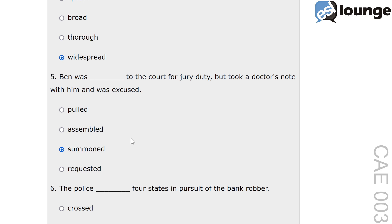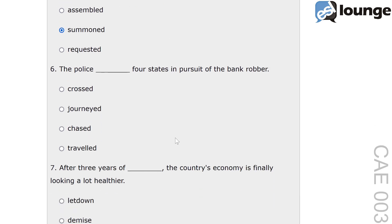Question 6. The police blank four states in pursuit of the bank robber. The options are crossed, journeyed, chased and travelled. The correct answer is crossed. Crossed means to move across a particular area, to traverse. For example, they crossed the desert on foot, indicating movement across an area. In this context, crossed describes the police moving across multiple states and their borders.